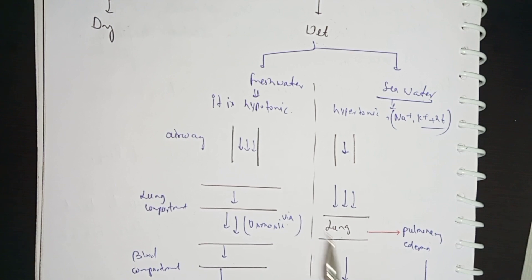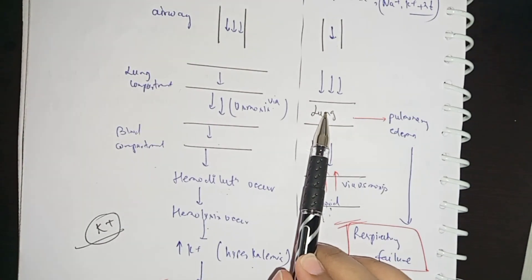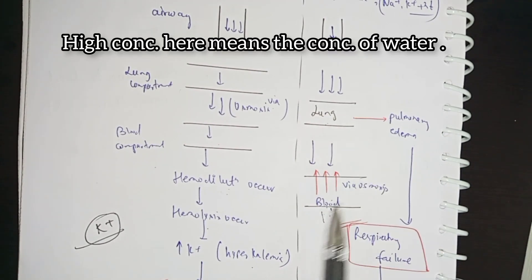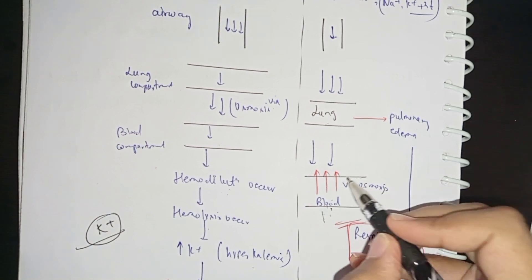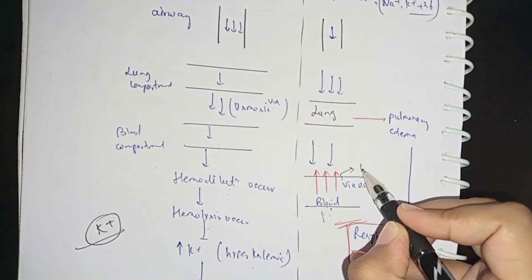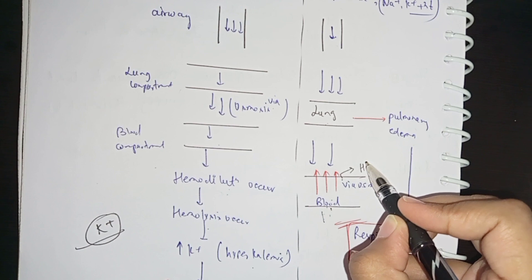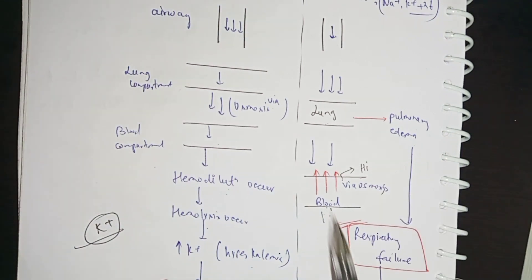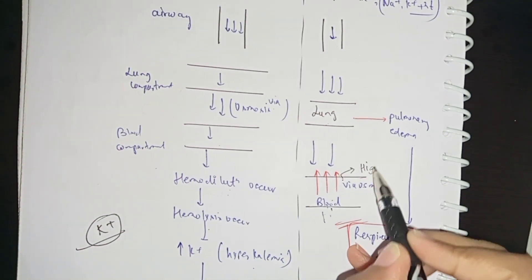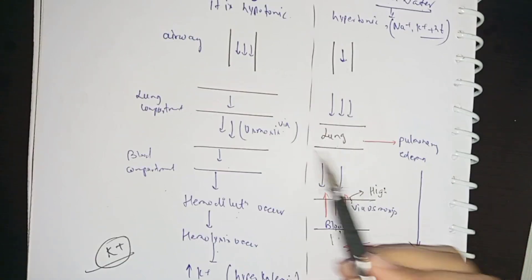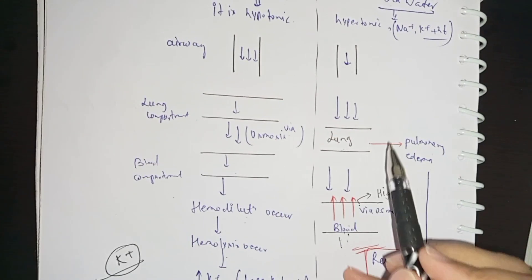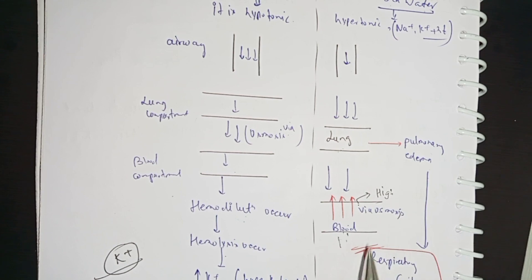We know that osmosis is high to low concentration. Here in the blood your ions are low, so your water is high.